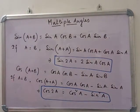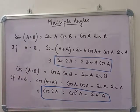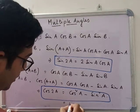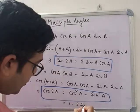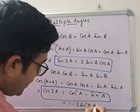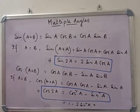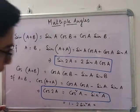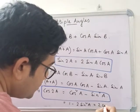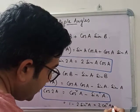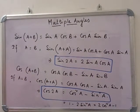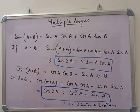So cos 2A = cos²A − sin²A is the first formula of cos 2A. If we substitute cos²A = 1 − sin²A, we get cos 2A = 1 − 2 sin²A. And substituting sin²A = 1 − cos²A gives cos 2A = 2 cos²A − 1. So there are three formulas for cos 2A.